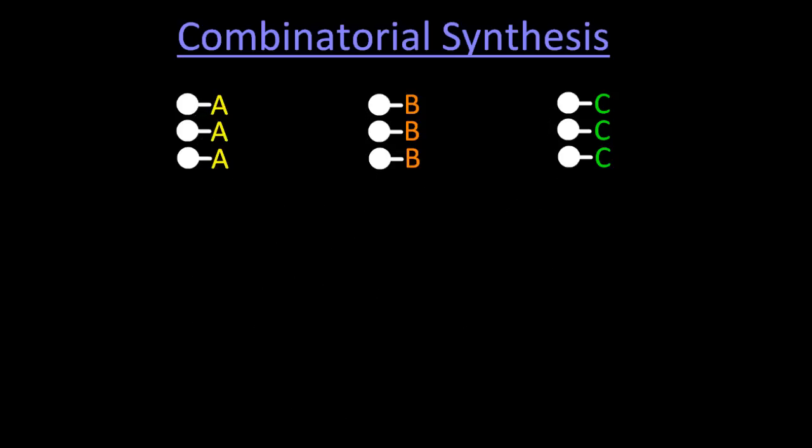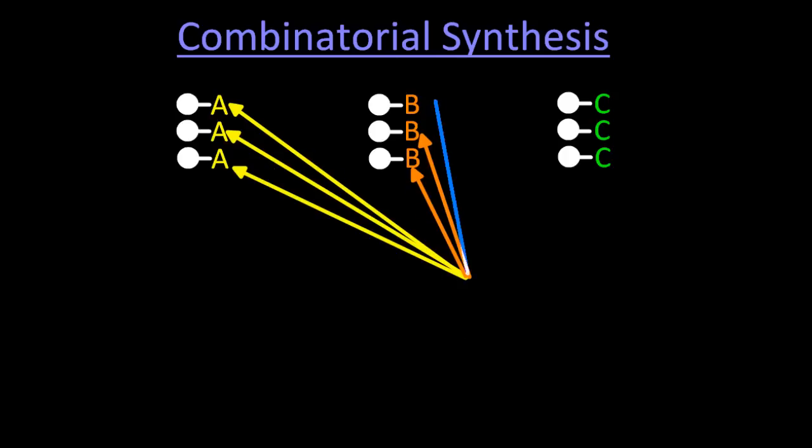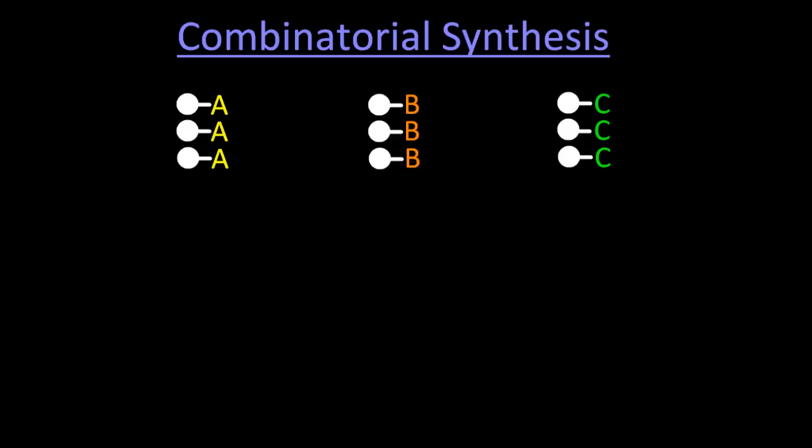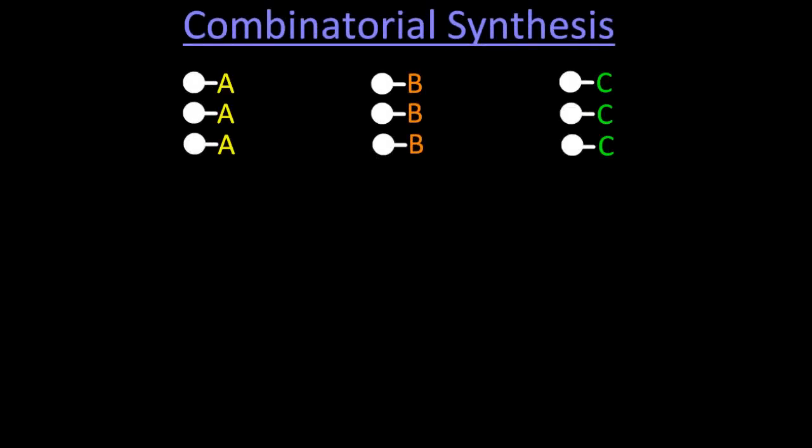And A, B and C, well they could be something like amino acids, chemicals that will chain one to the other to the other. Those green arrows should be pointing to the C, my mistake. So those could be amino acids or any other chemicals that can sequentially bond together.